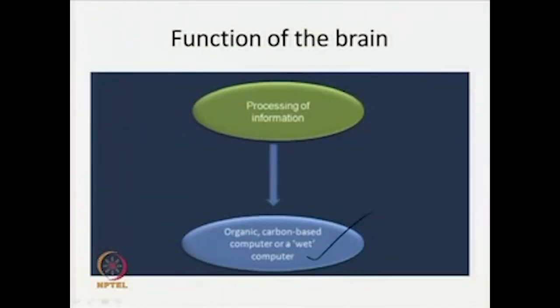Our brain can also be called a wet computer. This continues the analogy between the brain and the computer. The brain is a wet computer — not a silicon-based computer, but a carbon-based organic computer — whose job is the processing of information. The function of the brain is analogous to the function of the computer. The function of the various circuits of the brain is to process information, and this is toward the particular goal of generating appropriate behavior under environmental circumstances.